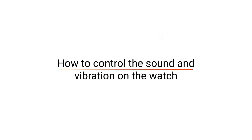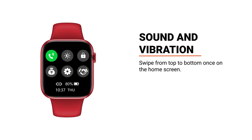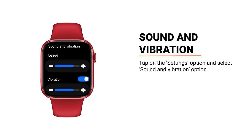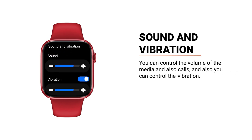How to control the sound and vibration on the watch: swipe from top to bottom once on the home screen. Tap on the settings option and select the sound and vibration option. You can control the volume of the media and also calls, and you can also control the vibration.